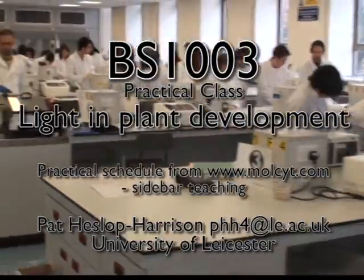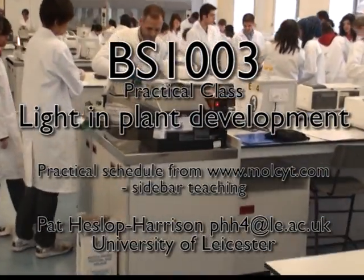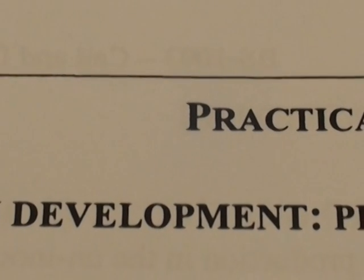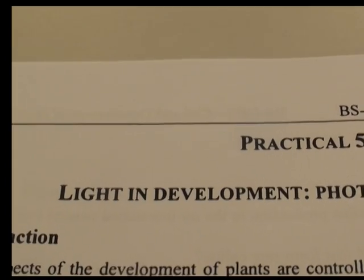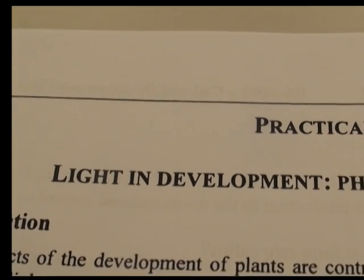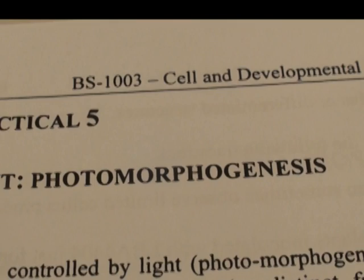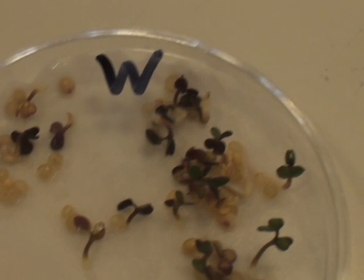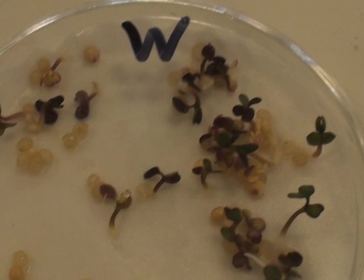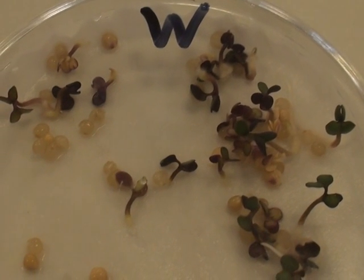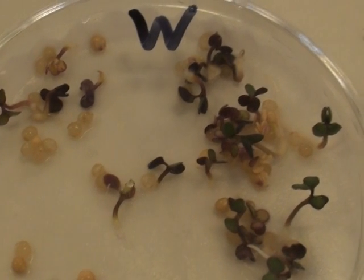In this clip we are looking at the effect of light on plant development. Plant development is fundamentally affected by not only the quantity of light, its brightness, but also by its quality. This leads to photomorphogenesis, the development of a pattern based on the control by light.